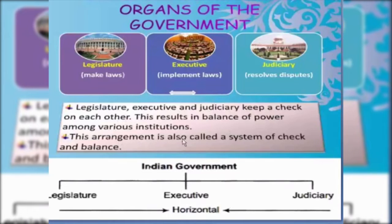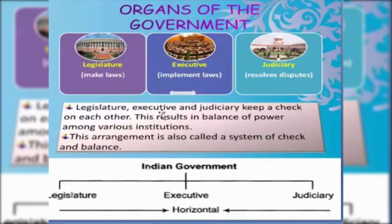Here, no organ is subordinate to the others. Each and every organ works independently, and no organ is subordinate to other organs. So there is a balance of power among the different organs of the government. This is also known as the horizontal distribution of power.